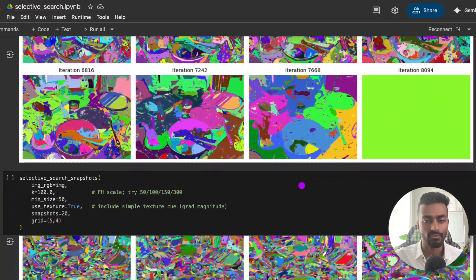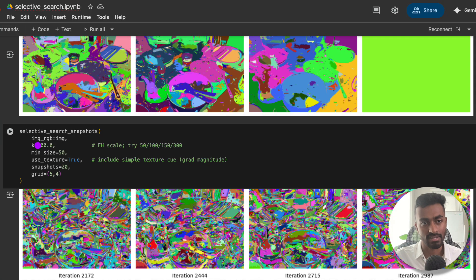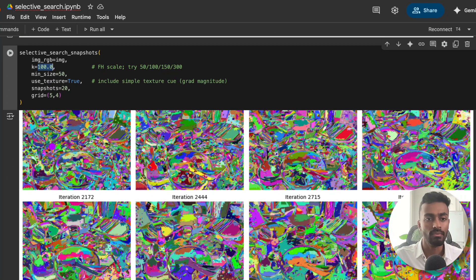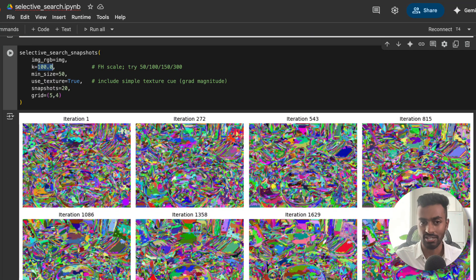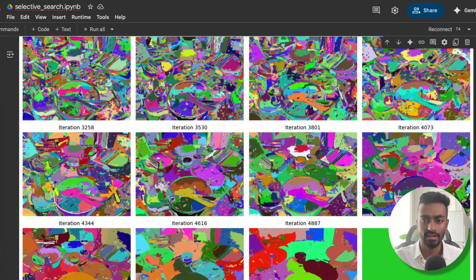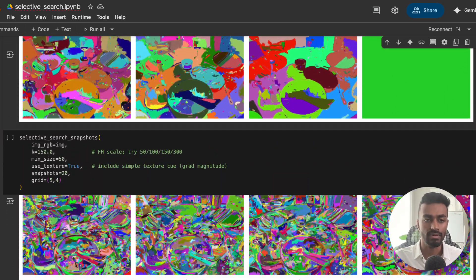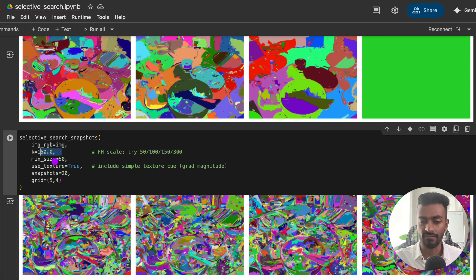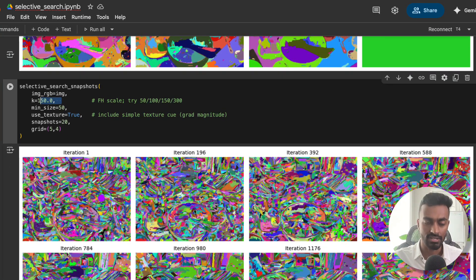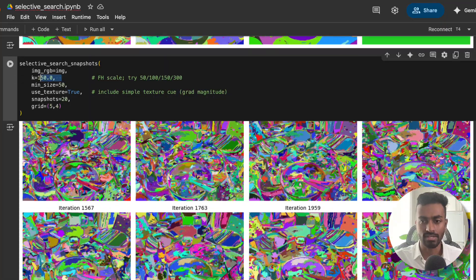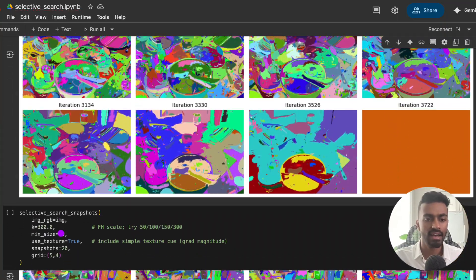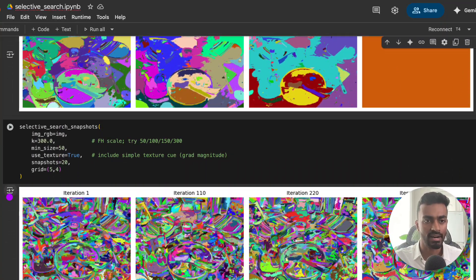And then what we can do is we can repeat it for different values of K. So this is K equal to 100. We will have now an initialization that looks a little bit different from the previous case. And we again try to create a hierarchy of merging these segments together until we get a single segment. We do the same for K equal to 150 as well, where we start like this, and then continuously merge these segments.